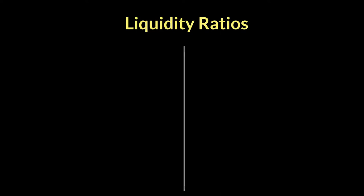Hello everyone, welcome back. In this video, we're going to look at the second type of ratios that stakeholders use to get a better understanding of what the published accounts hold in terms of the financial position of a business. These ratios are called liquidity ratios.